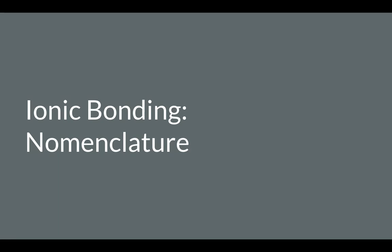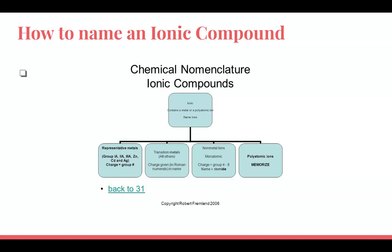We're going to start with ionic bonding nomenclature. You should have a heading at the top of your paper that says 'how to name an ionic compound' — this is one of your subheadings. Ionic compounds occur between a metal and a nonmetal, or a cation and an anion. Ionic bonding is actually really simple to name: the cation is named first and the anion is named second, always.